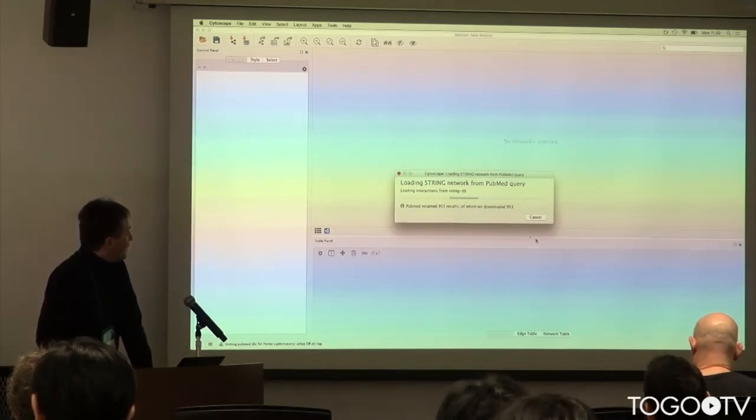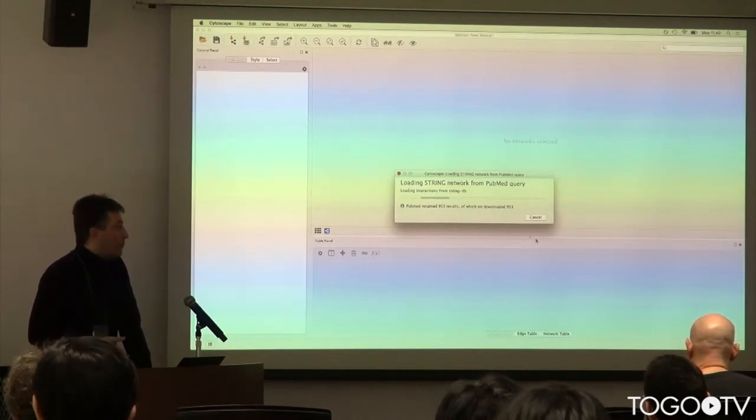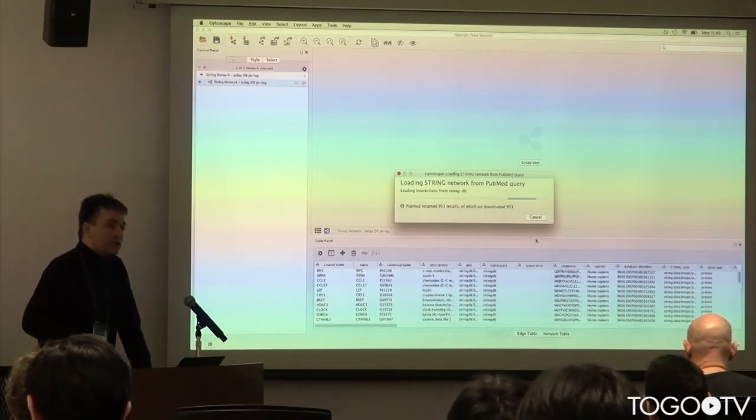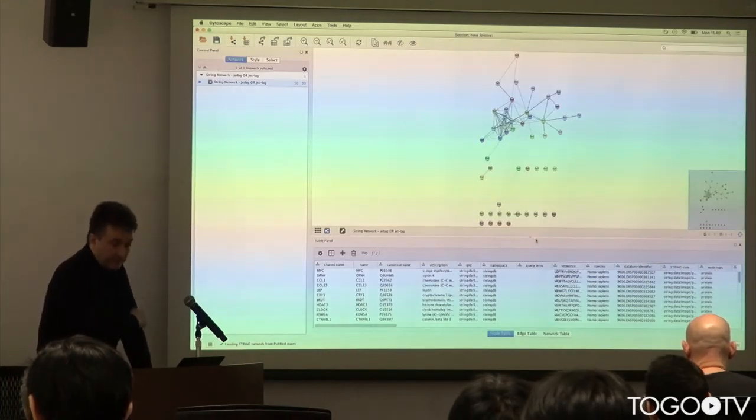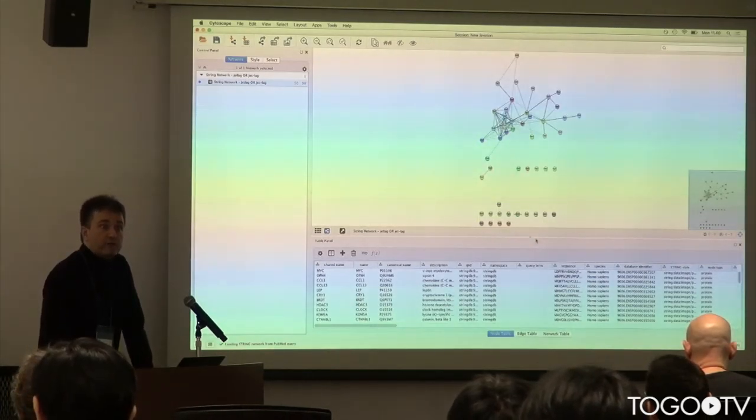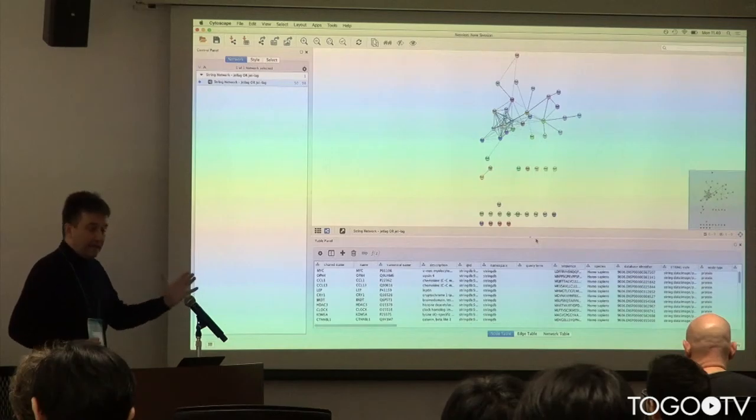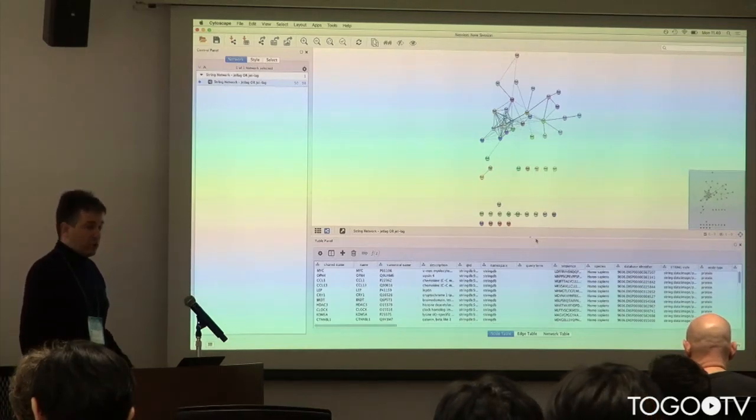So it went to PubMed, it found 953 abstracts, it then went and did enrichment analysis for all 20,000 proteins in human to find the top proteins, went to the STRING database, fetched the network, and there you have it. That's how long it takes. Most of the time was spent waiting for network traffic. Literally doing the whole ranking of all genes in the server side takes less than a second for a query like this.